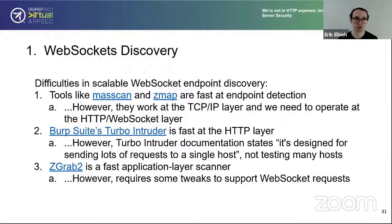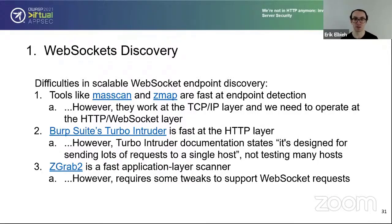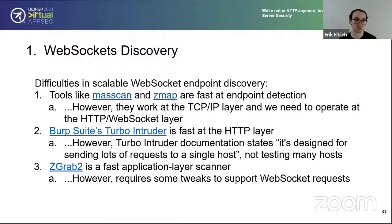Option two is Burp Suite's Turbo Intruder, which can do fast HTTP traffic communication. The difficulty is that Turbo Intruder is designed for sending lots of requests to a single host — we want the opposite: a few requests to many hosts. The documentation does suggest an alternative: Zgrab2, which provides fast application-layer scanning. It does require a few tweaks to support WebSocket requests, and there is a separate Zgrab2 fork that was used for this testing.